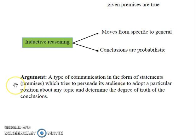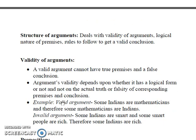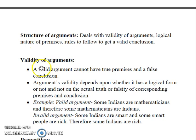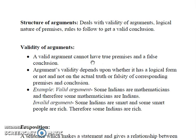Now let's go ahead and understand what we mean by an argument. An argument is a type of communication in the form of statements which tries to persuade its audience to adopt a particular position about any topic and determine the degree of truth of the conclusions. We further need to go through how these arguments are structured — basically, we deal with validity of arguments, logical nature of premises, and the rules of getting valid conclusions. In the later part of the video, we will cover the validity of conclusion; here we are going to discuss the validity of arguments in general. This is an important concept as UGC NET has asked direct questions from this portion.